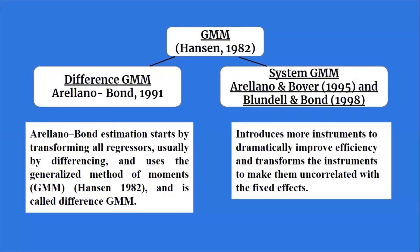The GMM model was originally proposed by Hansen in 1982. So as discussed, if the number of cross-sections is greater than the time period, and there is presence of endogeneity, heterogeneity, and autocorrelation in your model, and if you want to estimate a dynamic panel model, then you can proceed with the generalized method of moments.